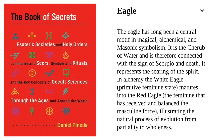Eagle. The eagle has long been a central motif in magical, alchemical, and masonic symbolism. It is the cherub of water, and is therefore connected with the sign of Scorpio and death. It represents the soaring of the spirit. In alchemy, the white eagle represents a primitive feminine state, but transforms into the red eagle — the feminine that has received and balanced the masculine force — illustrating the natural process of evolution from partiality to wholeness.